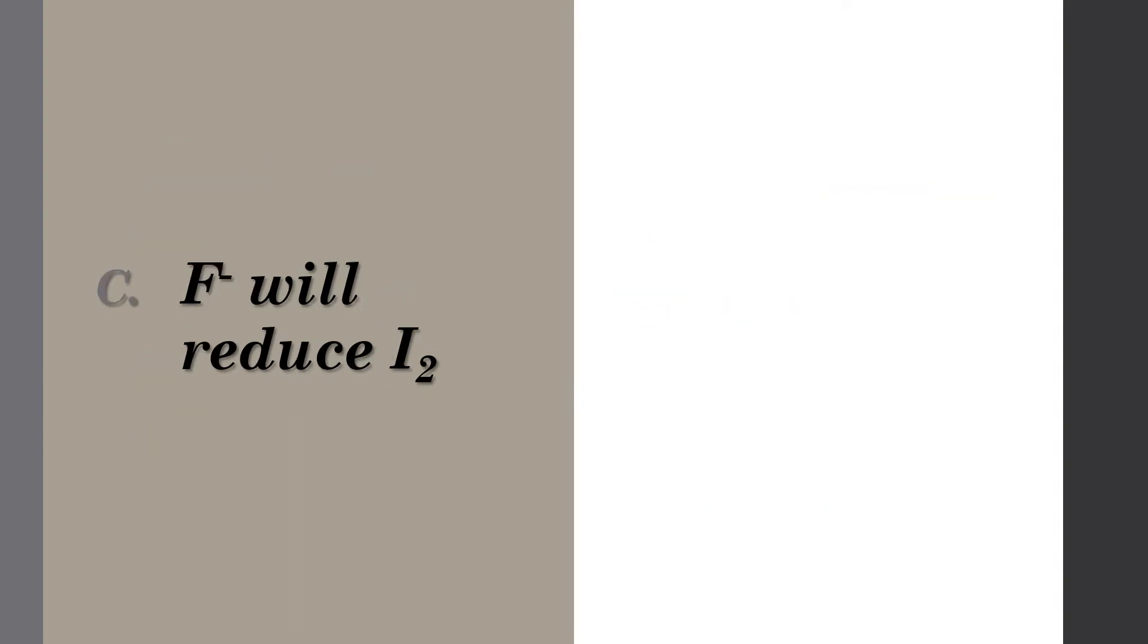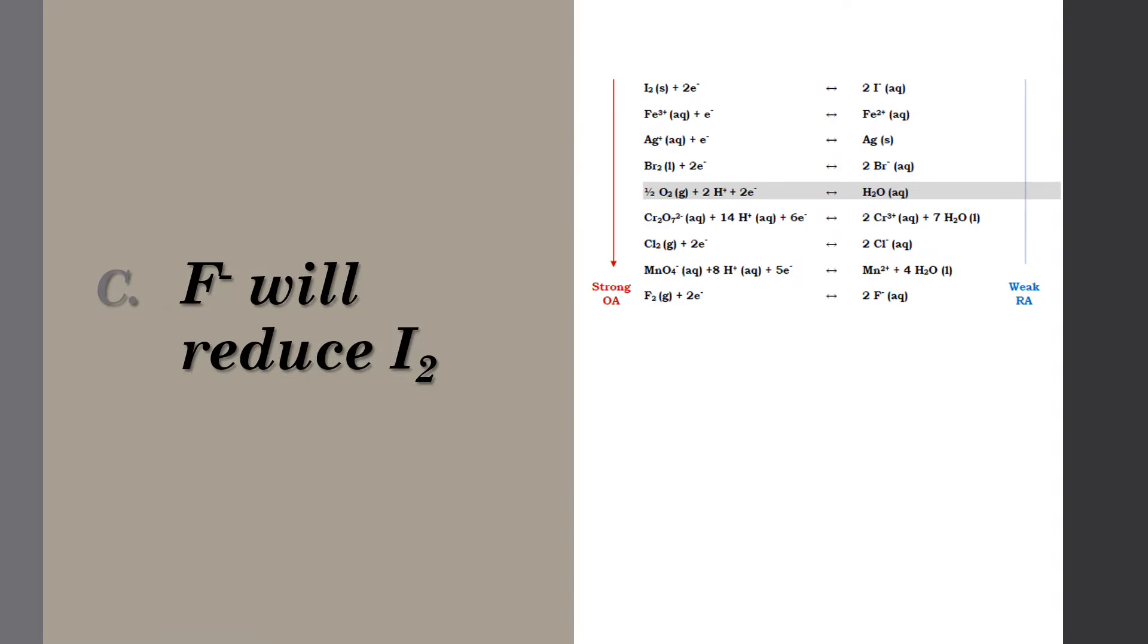Now option C says that fluoride will reduce iodine. This means fluoride is the reducing agent. Here again is the table. As we can see, both species are on the weaker side. Since they are both weak, no reaction will actually occur. So this statement is also false.